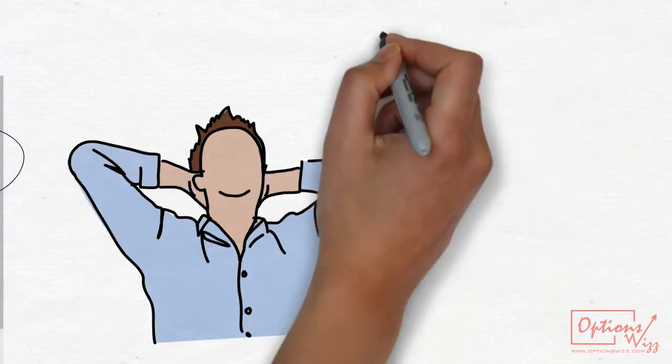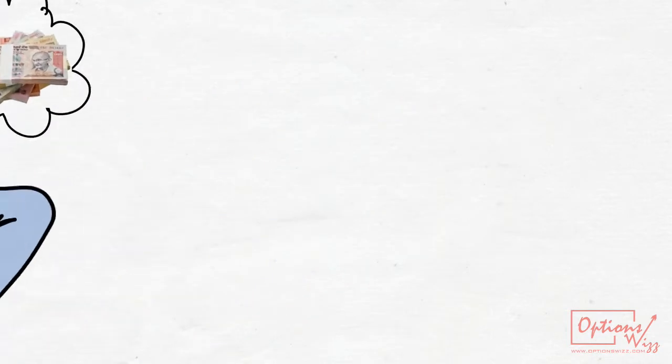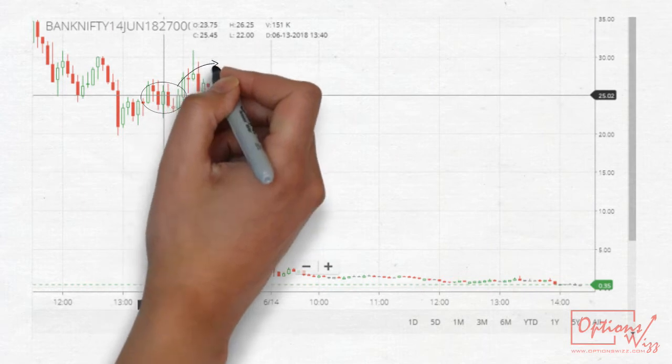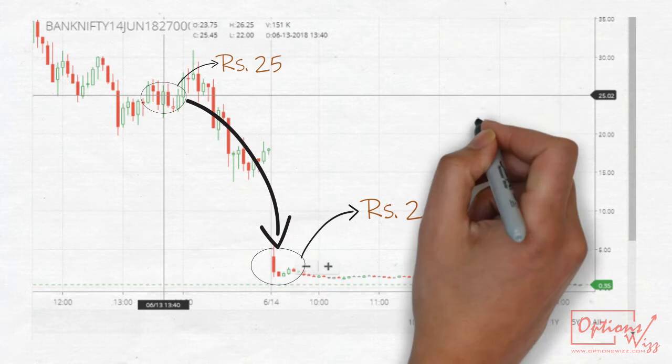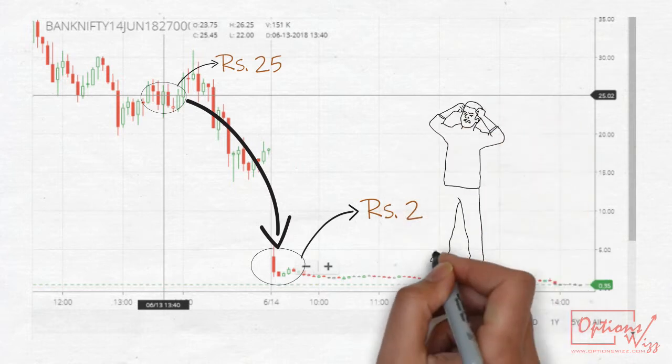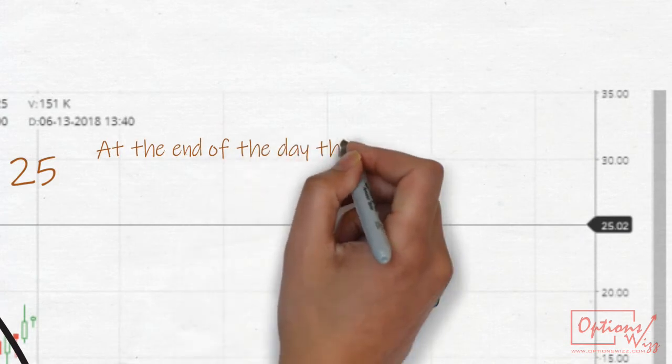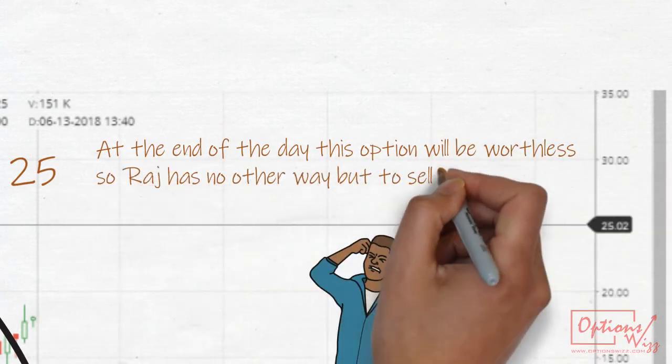Next day, super excited Raj is waiting for markets to open. The moment the market opens, Raj gets a big blow on his face. His rupees 25 option is trading at just rupees 2. His account is holding only rupees 4,000. At the end of the day, this option will be worthless, so Raj has no other way but to sell his option.